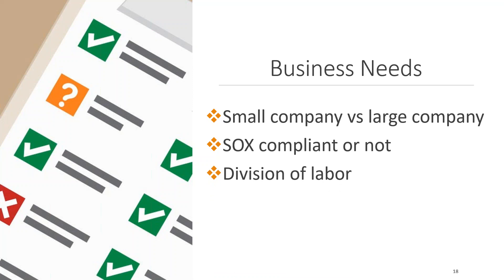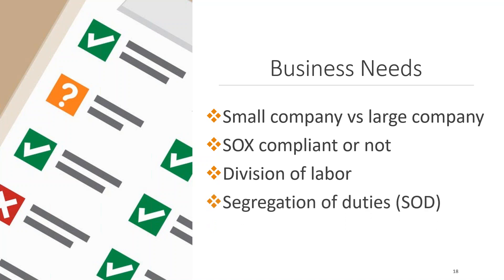Division of labor — depending on how your company is set up and work is divided among users, security can be tailored to your specific business needs, whether you need generalized or specialized roles. Segregation of duties (SOD) is an internal control used to prevent fraud. Where more than one person shares a job, roles would have to be split between users based on what their portion of the process is.